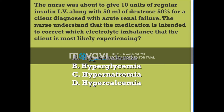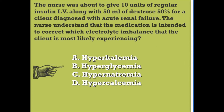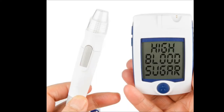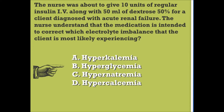If you look at the other answer options, option B — hyperglycemia — means high blood sugar. In cases of high blood sugar, you do not want to give more sugar. In essence, you do not want to give dextrose 50%, as this would cause the blood sugar to get even higher. So this answer option would not be correct.